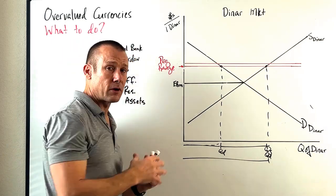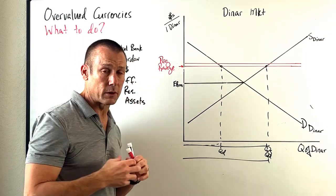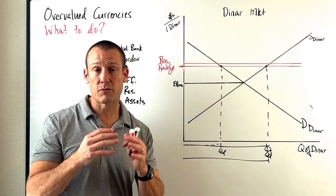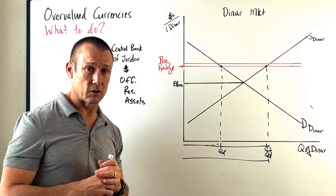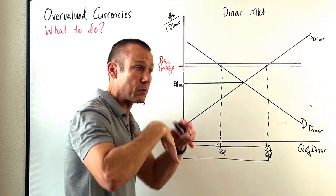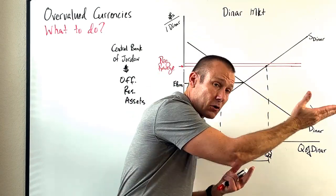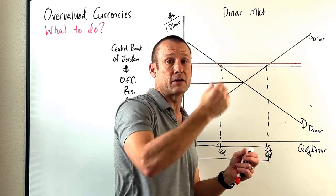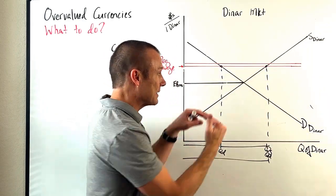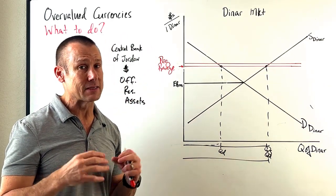But what if they don't have enough dollars? They can't print dollars — they're not the U.S. Federal Reserve. They only have so many dollars. The next thing they can do is borrow dollars, either from the U.S. government or from the IMF. If they borrow dollars, they do the same thing again — demand the dinar, shift it out, handing those dollars to the excess number of people that have dinar wanting to go out to buy imports. That increases demand for the dinar — though it puts Jordan into foreign debt.